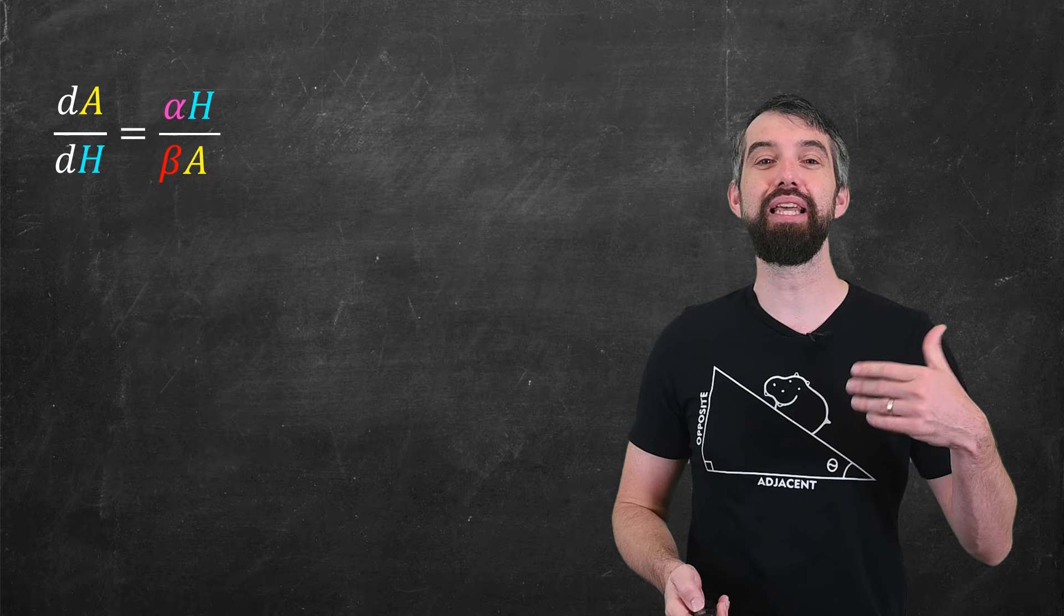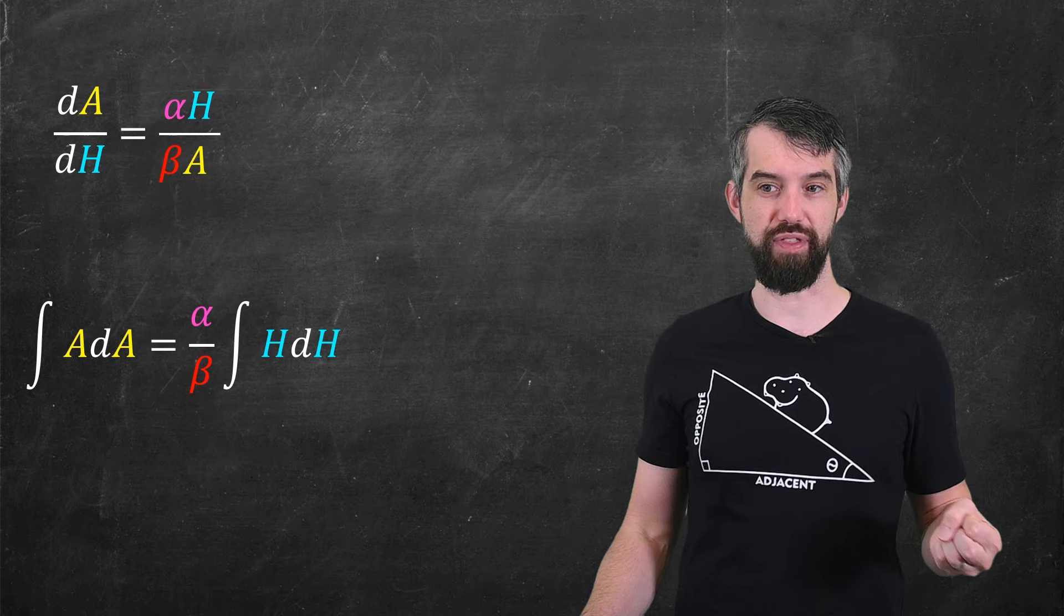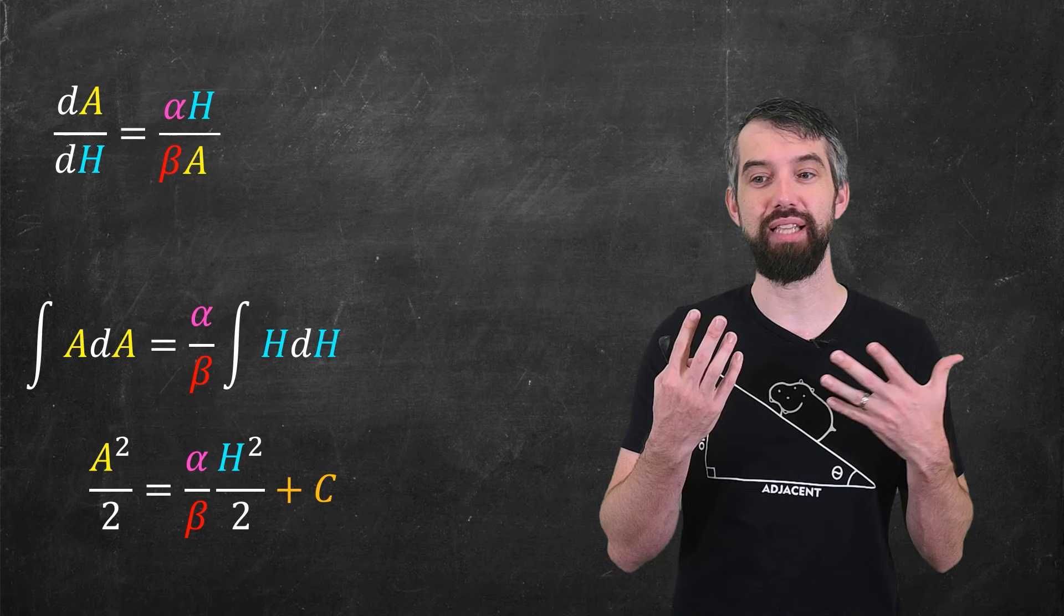Basically, I'm going to isolate everything to do with A's on one side and everything to do with H's on the other. So I sort of multiply up by the A and multiply up by the dH. If I then integrate both sides of this, well, the integral of A is going to be A squared divided by two. The integral of H is H squared divided by two. And I get this equation here.